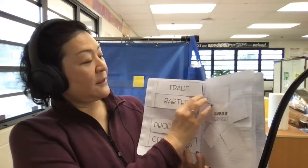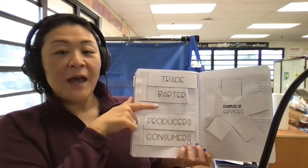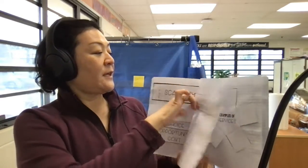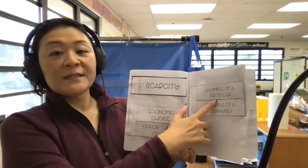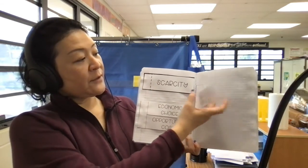Okay, the next page will be the trade and barter and then also the producers and consumers. After that will be example of a producer and example of a consumer. These two flaps.